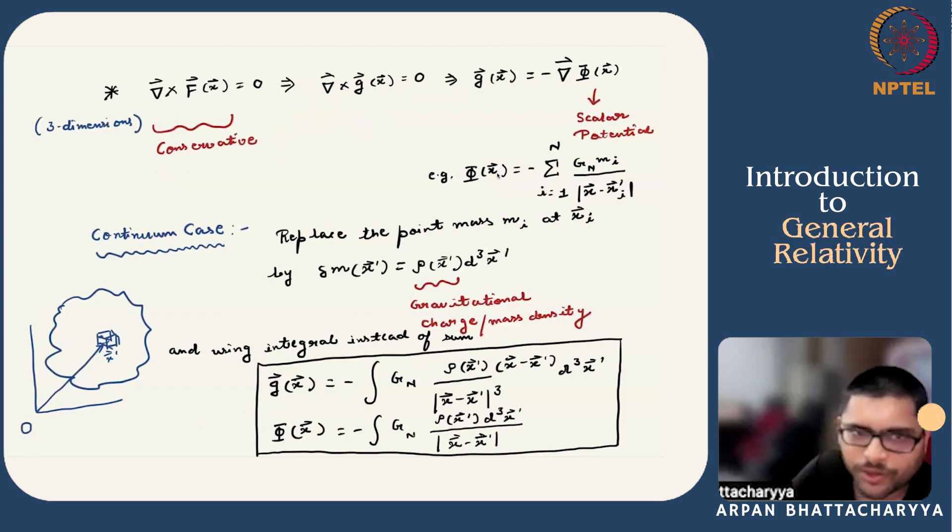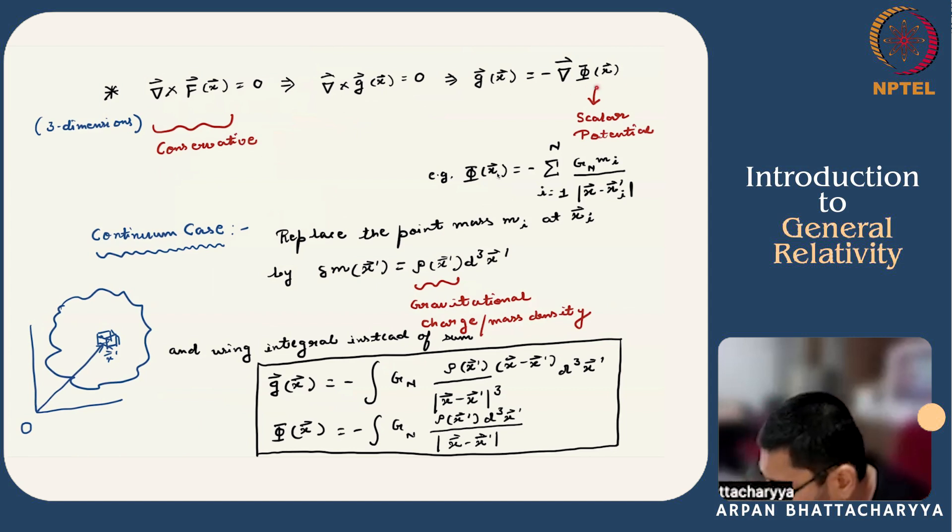We can easily show that the curl of F is 0, that is it is a conservative force, which implies that curl of g, the gravitational field, is 0. So we can write g as gradient of a scalar function which we denote by capital Φ, and this is known as the scalar potential. For this n point masses, the expression is given. We are mostly working in three spatial dimensions unless stated otherwise.